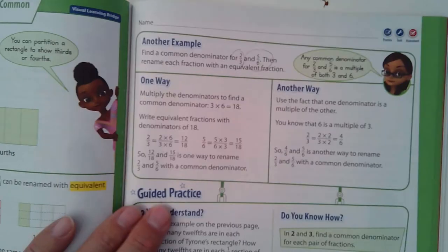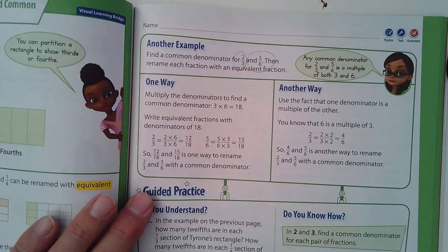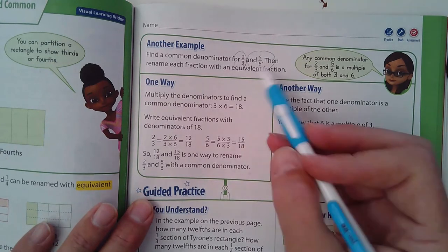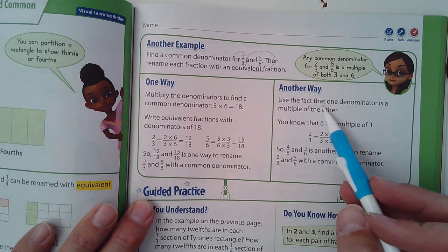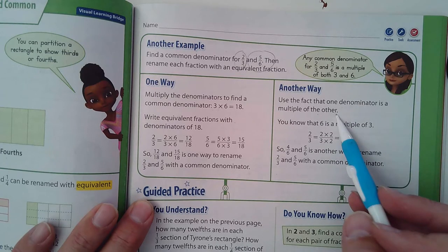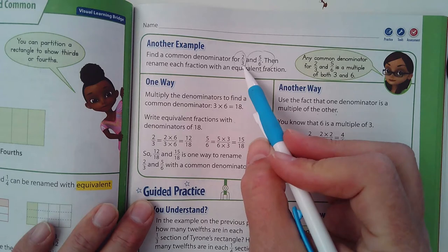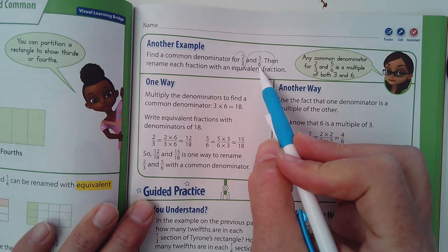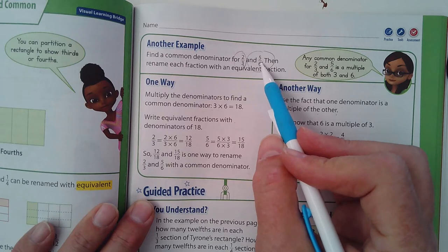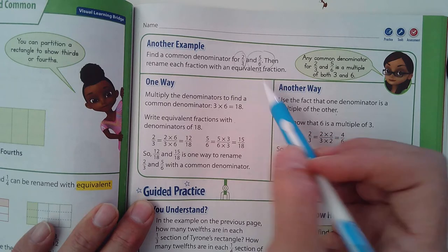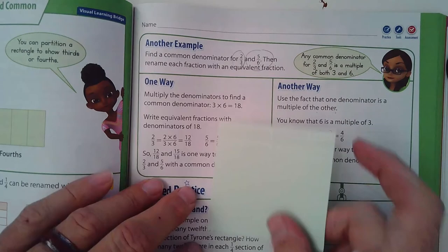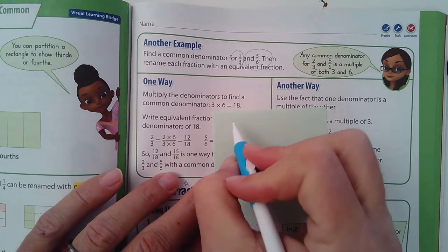Now that's a nice shortcut and you could do it that way, but sometimes it's not the smallest denominator, but for our purposes it'll work. Another way is use the fact that one denominator is a multiple of the other. So in other words, look at this: three goes into six and six goes into itself, so another denominator would also be six.